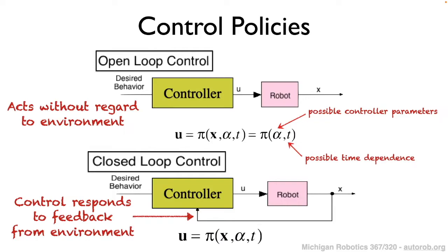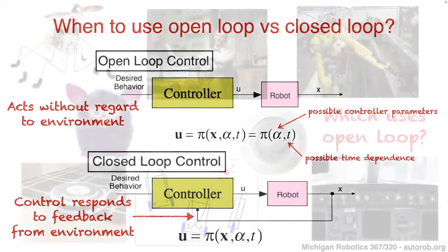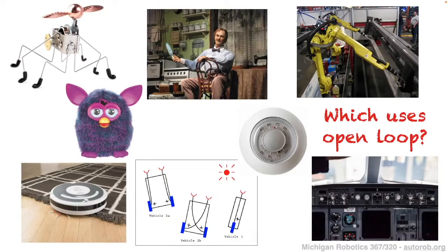In open loop control, the controller generates a command that is agnostic to what the current environment is — it ignores any sensor input or knowledge of what the robot state was at the previous time step. The robot just continually sends actions without access to sensing information. In closed loop control, the controller explicitly has access to feedback from the environment. There's a loop that feeds the robot state X back into the controller, so at every time step the controller's next decision depends on the results of its previous control and the previous robot dynamics.